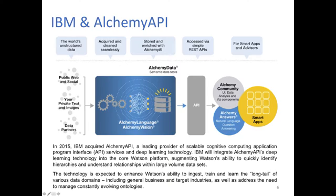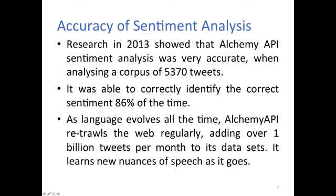This is a recent acquisition by IBM. It's also quite accurate — from a corpus of 5,370 tweets, the Alchemy API was found to be accurate 86% of the time. As language evolves, the Alchemy API re-crawls the web regularly, adding over 1 billion tweets per month to its datasets, learning new nuances of speech as it goes along.